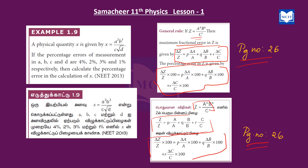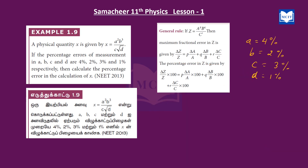Now, we will use the formula for the percentage error and solve this. When we have a percentage error, we will take a equals 4%, b equals 2%, c equals 3%, d equals 1%. Now, we have a power value — we will take a squared, which is 2.